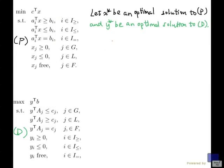So we have our optimal solution x star and y star to P and D. And the complementary slackness conditions are going to say the following.